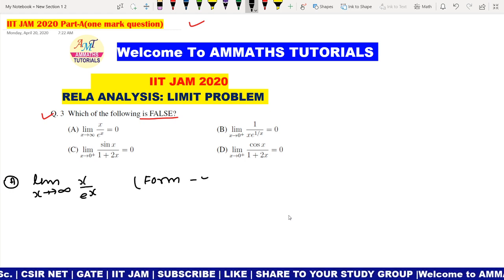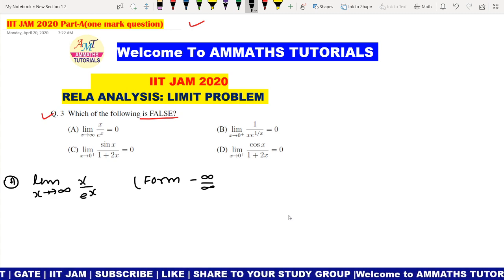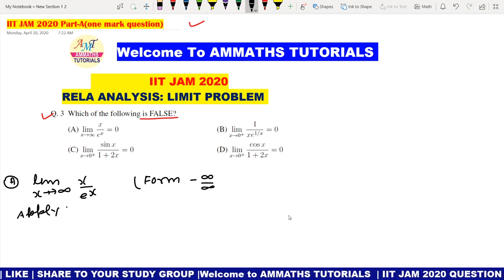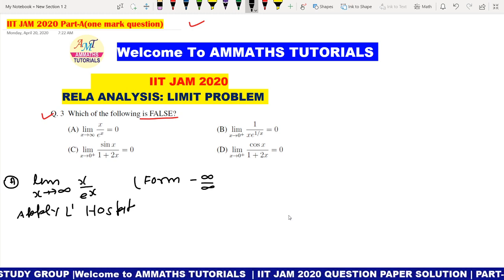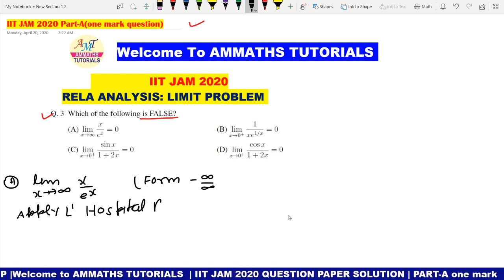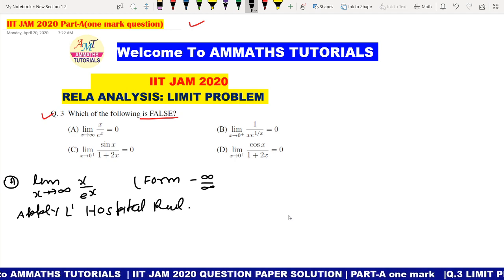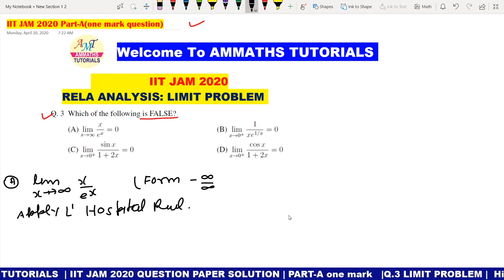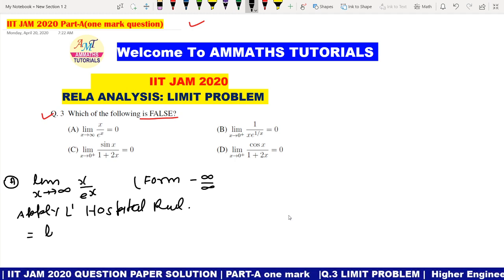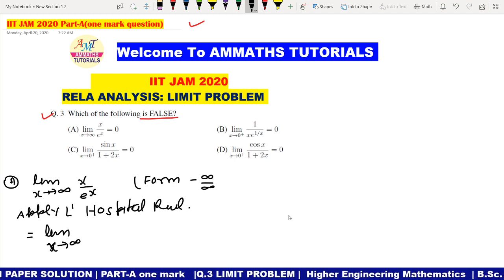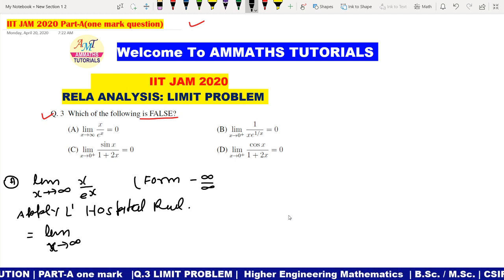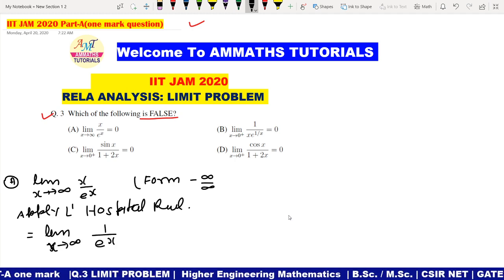Apply L'Hospital rule. The indeterminate form is infinity/infinity form. Limit x tending to infinity, and if we apply L'Hospital rule, 1 upon e power of x.